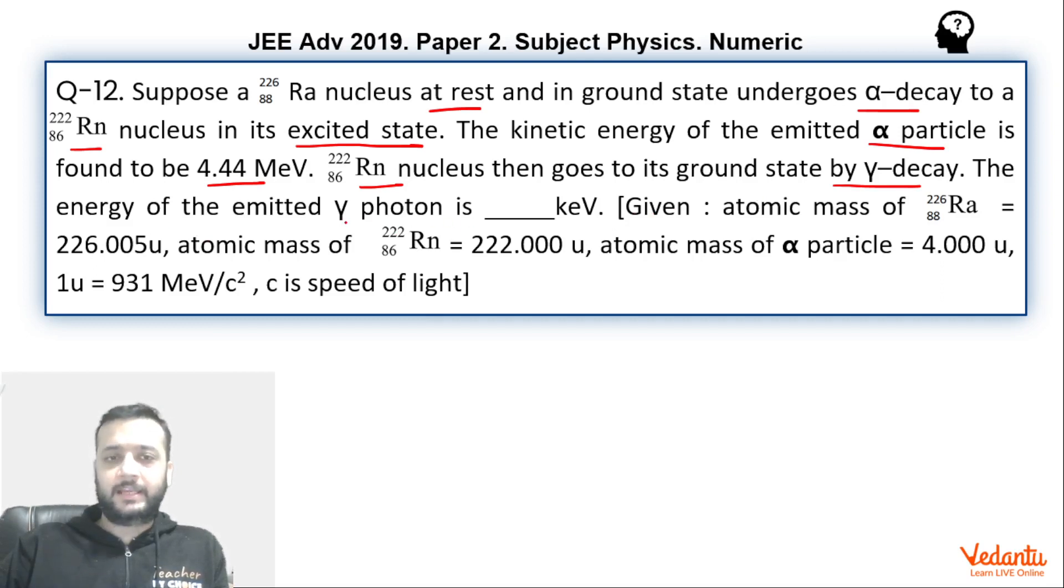So we have to find the energy of this gamma ray photon itself. In the question we have been given the atomic mass of the radium, atomic mass of the radon and the atomic mass of the alpha particle and the energy and the mass equivalence relation has also been given to us.